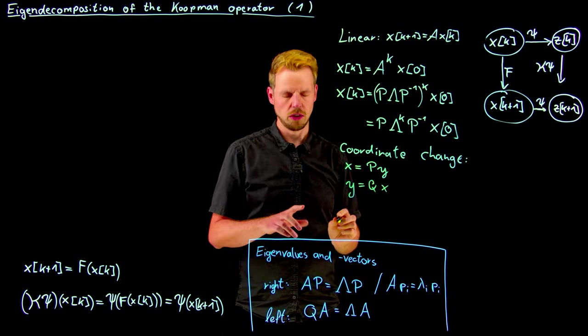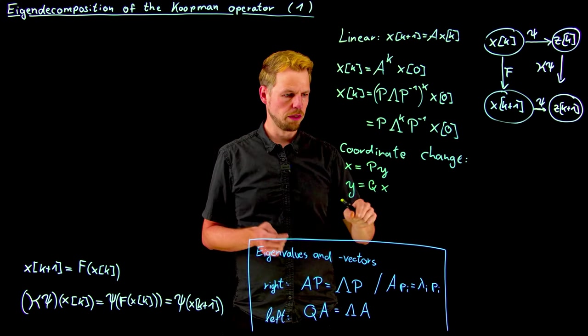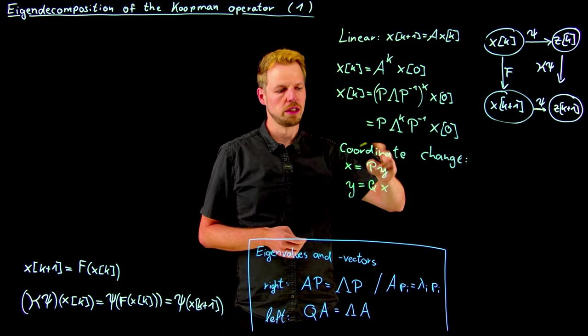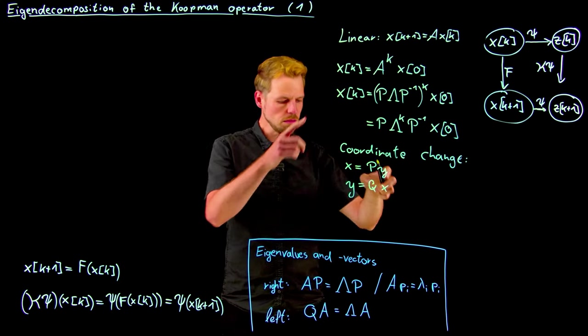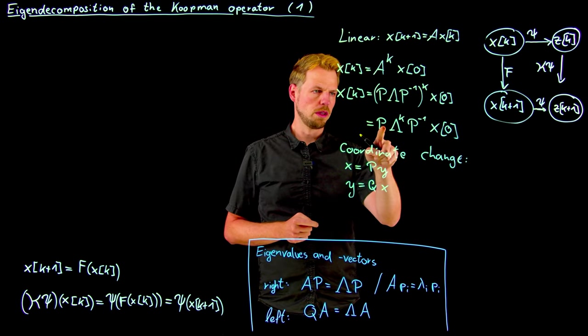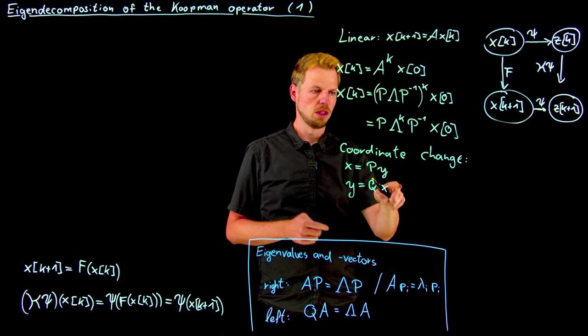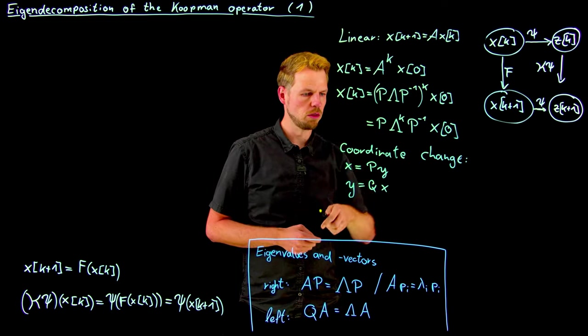So what I'm using here is that P and Q define a dual basis, so we can take the inverse and do it like this. And if we do so, then what we can simply find is that, multiplying with P inverse from the left, this would give me a y_k here and a y_0 here.